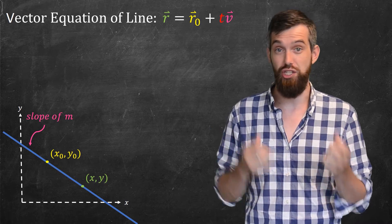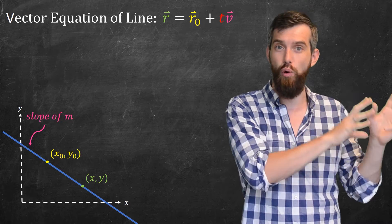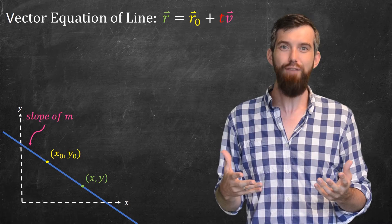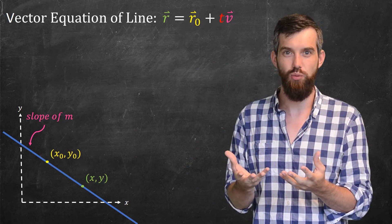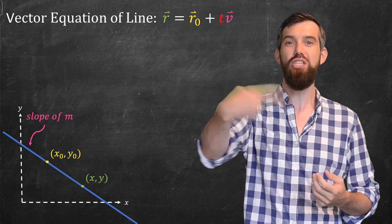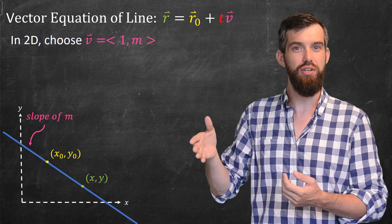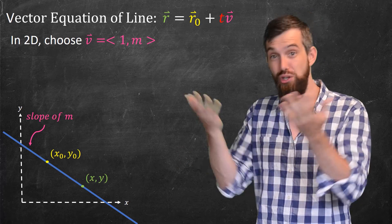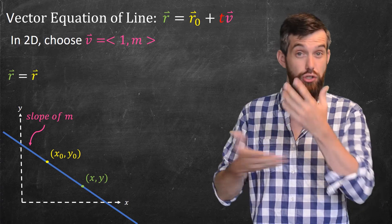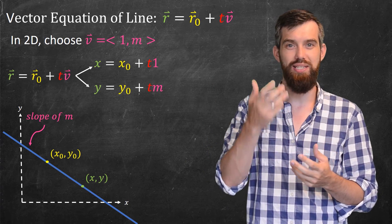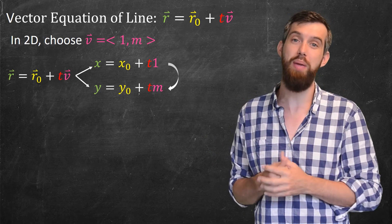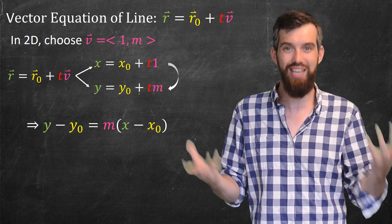You might think the vector equation that works generally in n dimensions and the point-slope equation we saw in the plane look pretty different — the vector equation has a t, for example. But if we apply the vector equation in two dimensions and choose v to be (1, m) — stepping one to the right means going up by the slope m — then separating components gives x equals x0 plus t and y equals y0 plus tm. Solving for t and substituting gives exactly y minus y0 equals m times (x minus x0). So these two ways of thinking about it are exactly the same.